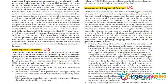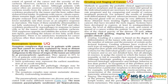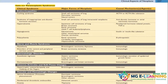अगला topic grading and staging of cancer का है — यह topic बहुत ज़्यादा important है। Table 6.6 जिसका मैंने पहले ज़िक्र किया, paraneoplastic syndrome की examples हैं। पूरा table नहीं करना, बस तीन-चार examples और उनकी major forms करनी होती हैं।